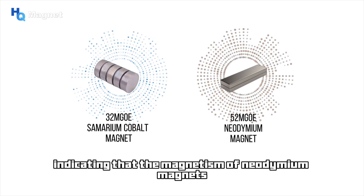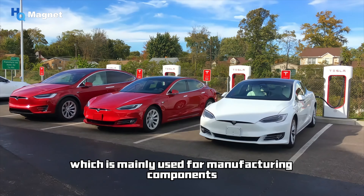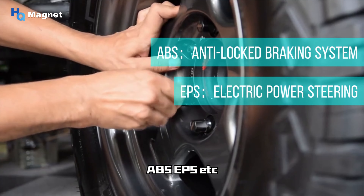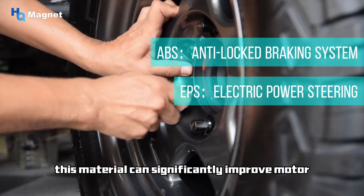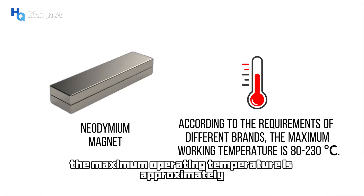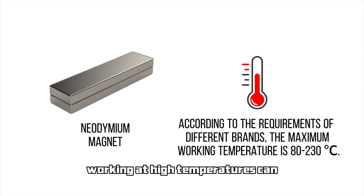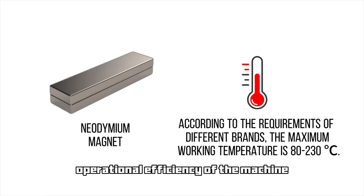Each new energy electric vehicle requires approximately 2.5 kilograms of neodymium magnets, which is mainly used for manufacturing components such as drive motors, ABS, EPS, etc. This material can significantly improve motor energy efficiency and reduce energy loss, and is currently one of the essential materials for manufacturing energy-efficient motors. Although the performance of neodymium magnets is impressive, the maximum operating temperature is approximately 230 degrees Celsius. Working at high temperatures can lead to a decrease in performance, thereby reducing the operational efficiency of the machine.